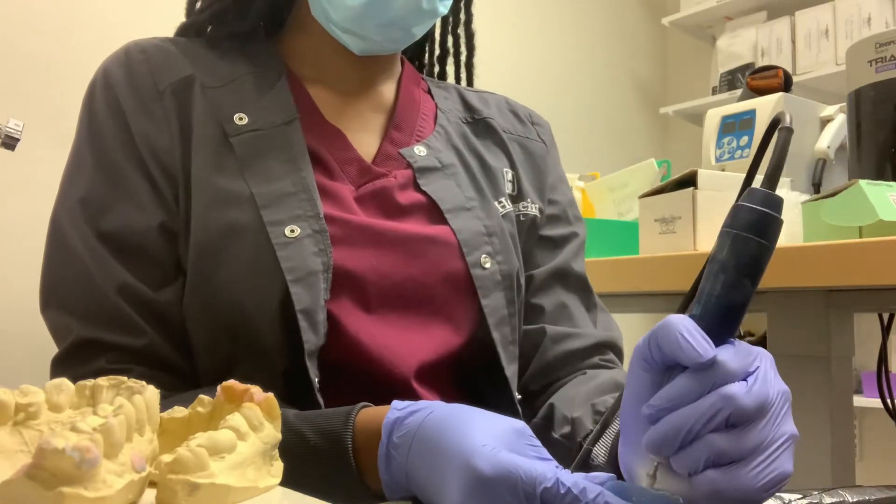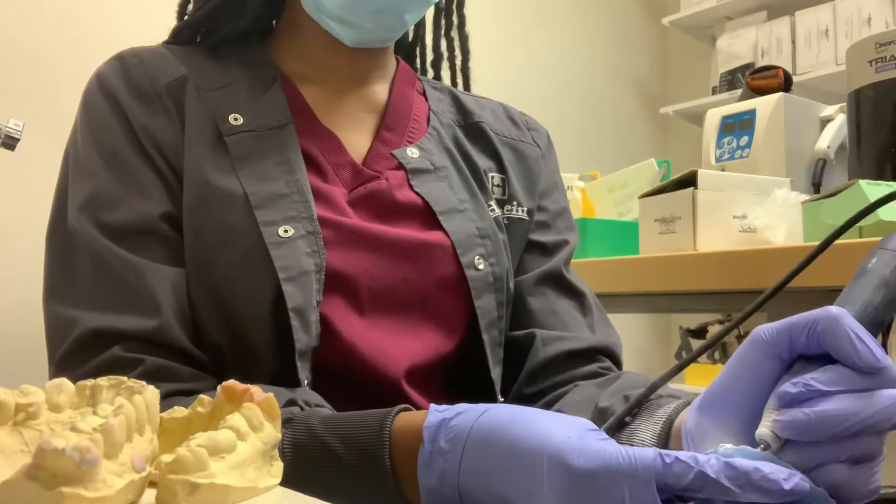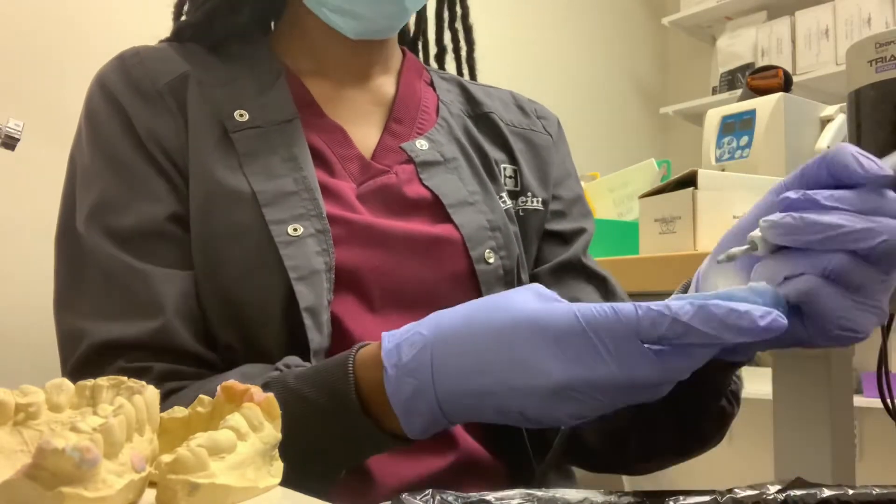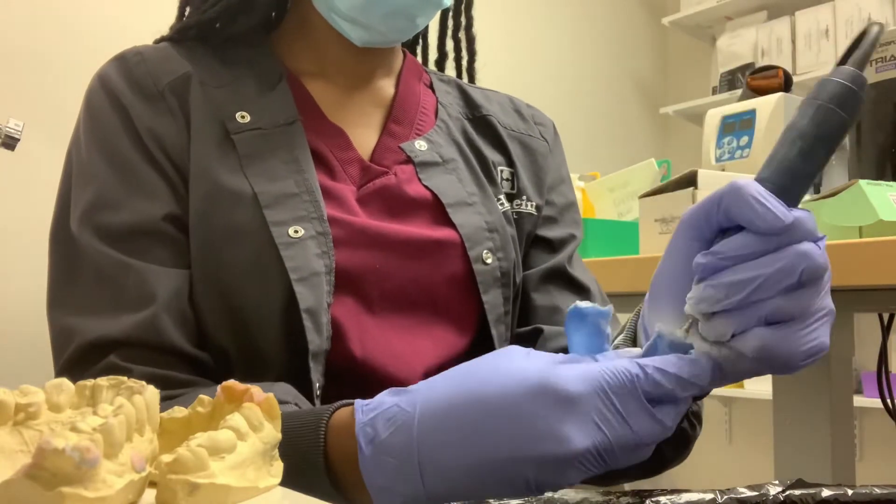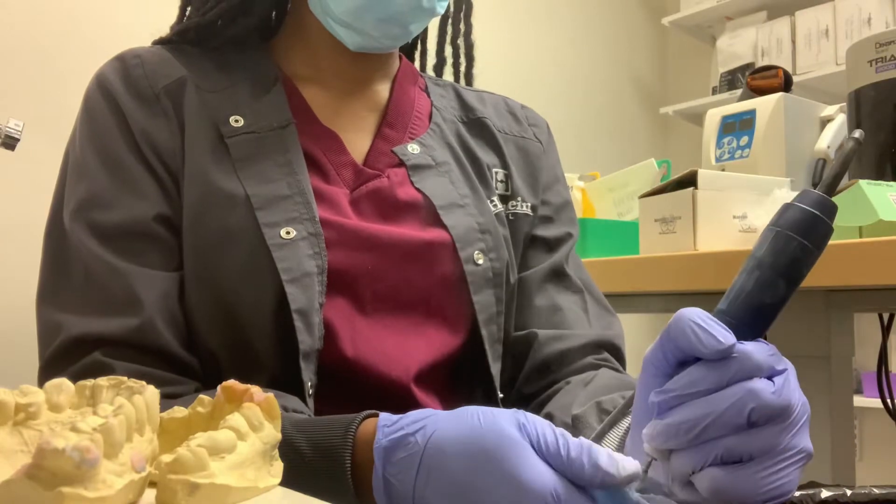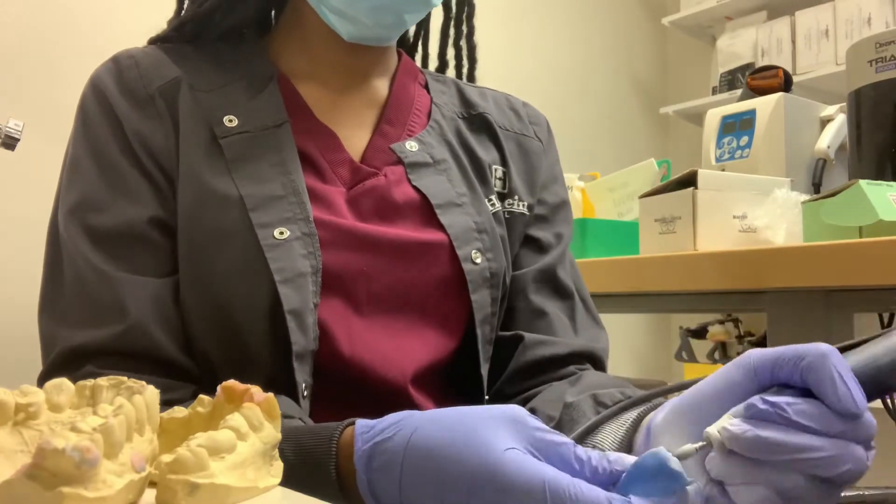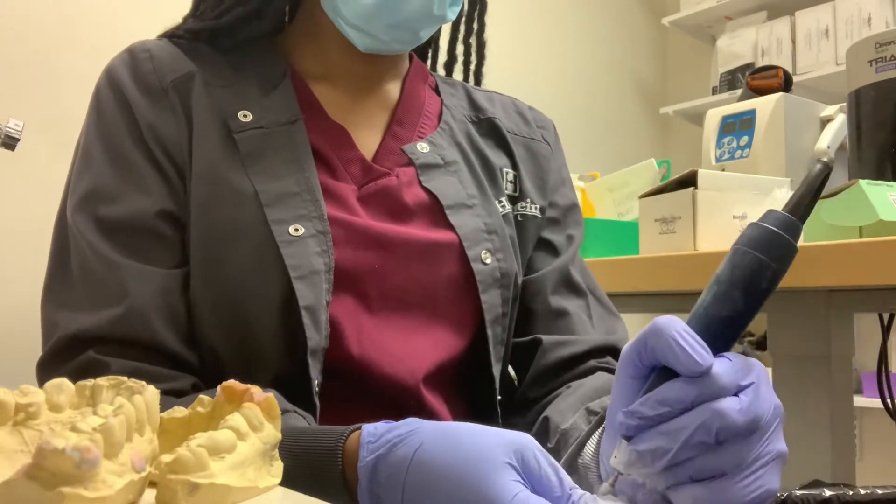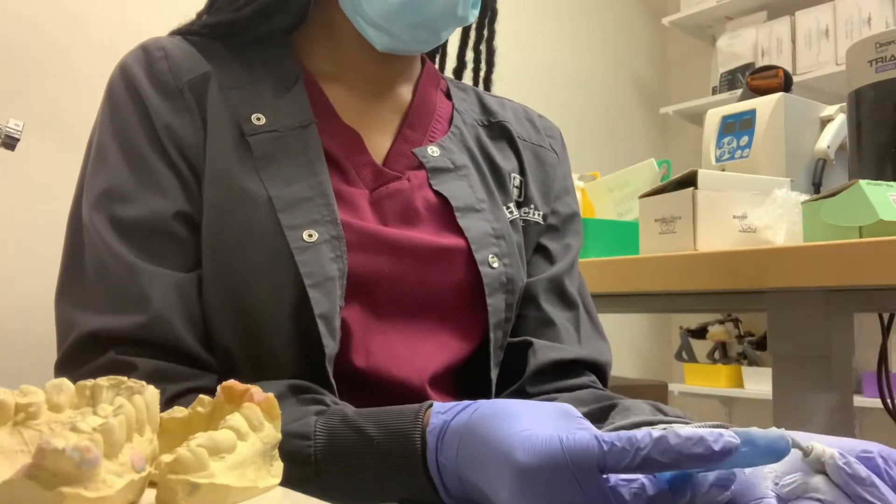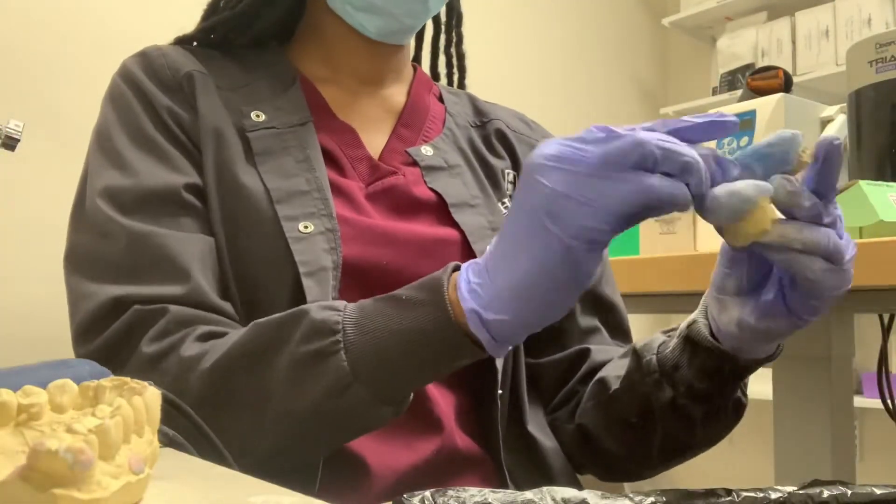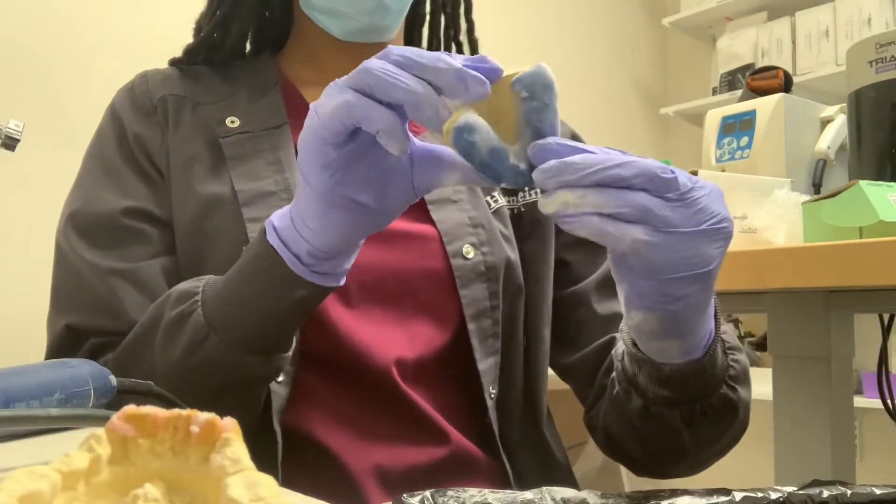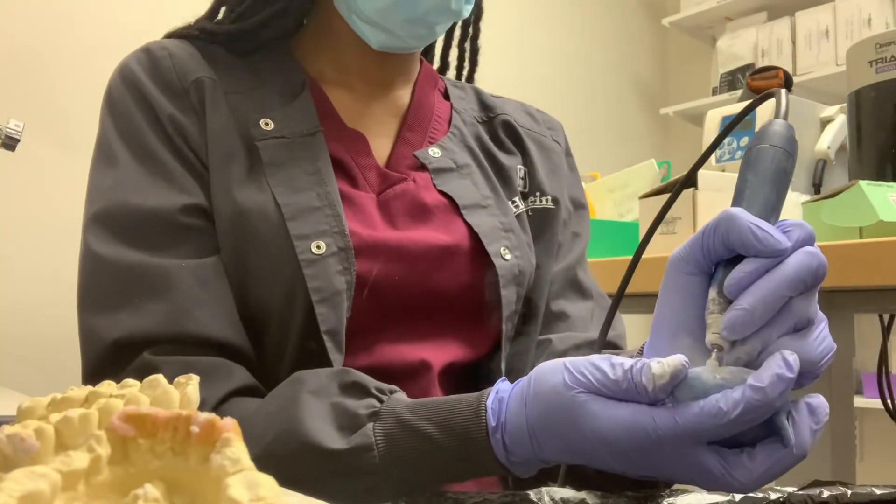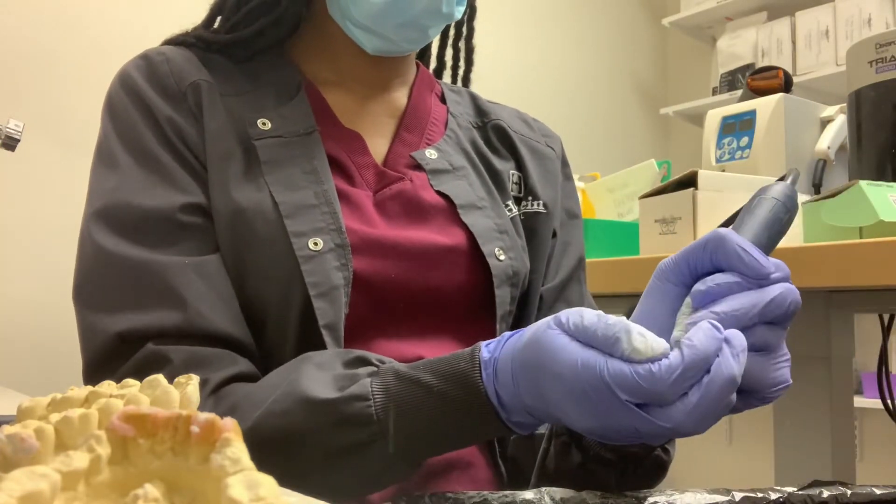In this next clip you see me trimming something that is called a custom tray. If you look to my left, you see that is the model that I just poured up. That's what it looks like once it's hardened up. But what we do is we place this material on top of that along with wax, and it gives us this custom tray to fit a patient's mouth exactly how we want it. We usually do this for people who come in for like partial dentures and night guards. So you'll just see me keep trying it on the model to make sure it's fitting correctly. You don't want to have any little snacks or anything, you wanted to go in there as perfectly as possible.